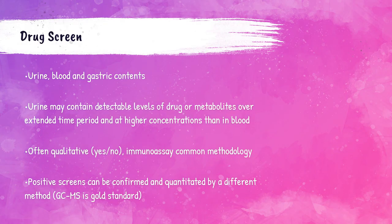Urine, blood, and gastric contents can all be used for the screening of drugs. Urine is most often the sample of choice because drugs and their metabolites can be detected over a longer time in urine than in blood.